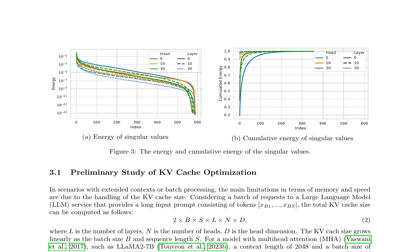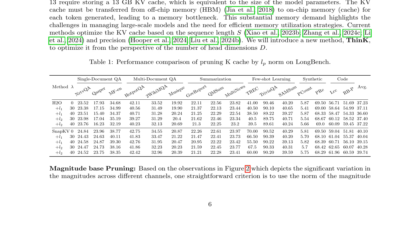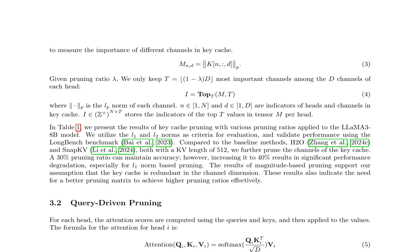The paper presents a preliminary study of KV cache optimization, highlighting the challenges in managing large-scale models and the need for efficient memory utilization strategies. Current methods optimize the KV cache based on sequence length and precision, but the authors propose THINK to optimize it from the perspective of the number of head dimensions. A performance comparison of pruning K cache by LP norm on LongBench is provided. The paper discusses two methods for pruning: magnitude-based and query-driven.